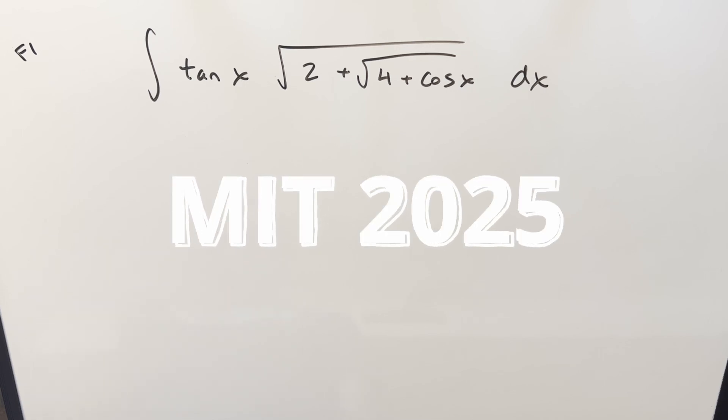Okay, we have a tricky problem here today from MIT Integration Bee 2025 finals number one. We have the integral of tan x times square root 2 plus square root 4 plus cosine x dx.